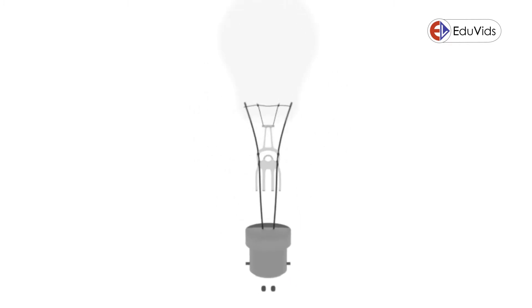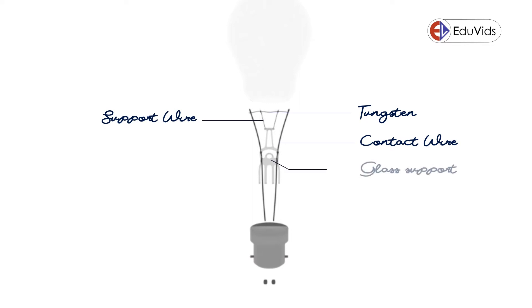The incandescent bulb consists of a tungsten filament made up of spiral turns, contact wires, support wires, glass support, holder cap, foot contact, and glass bulb which is filled with inert gas.